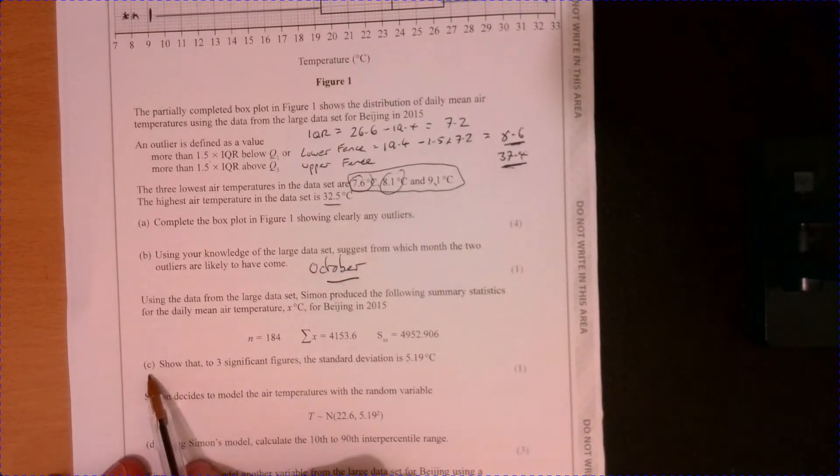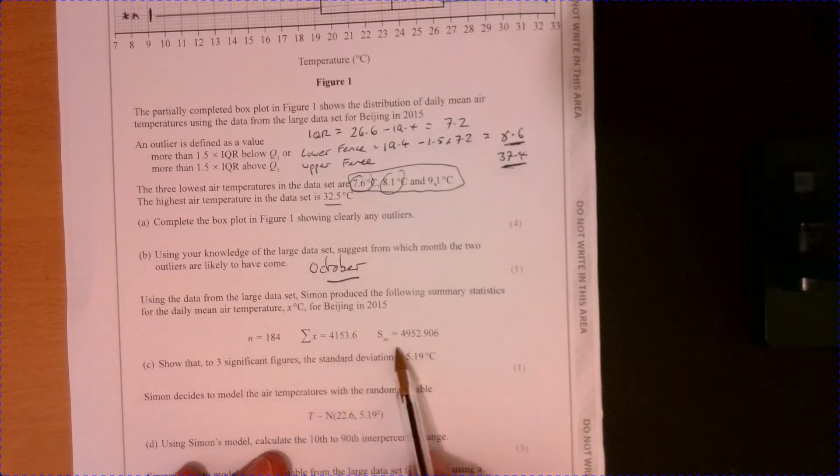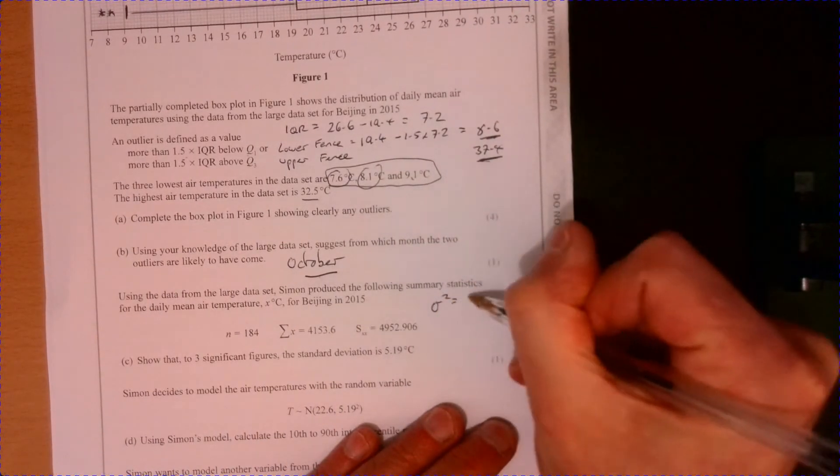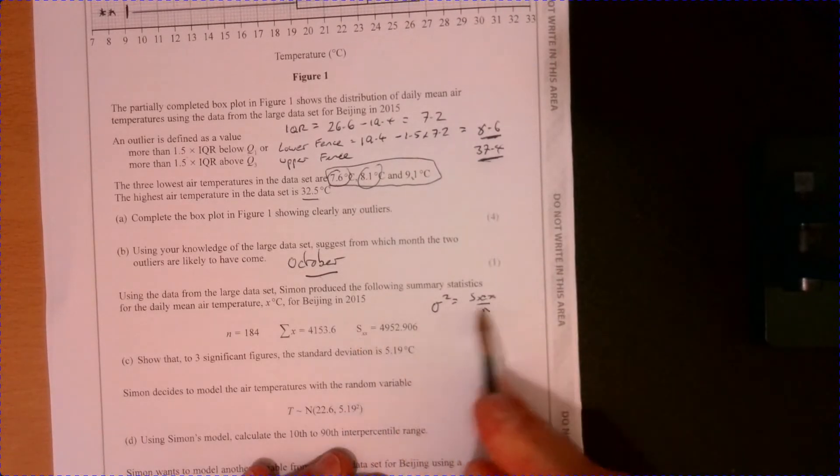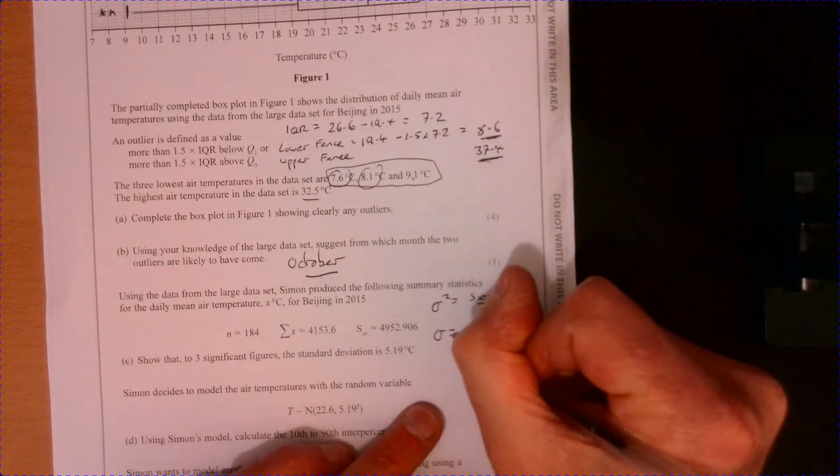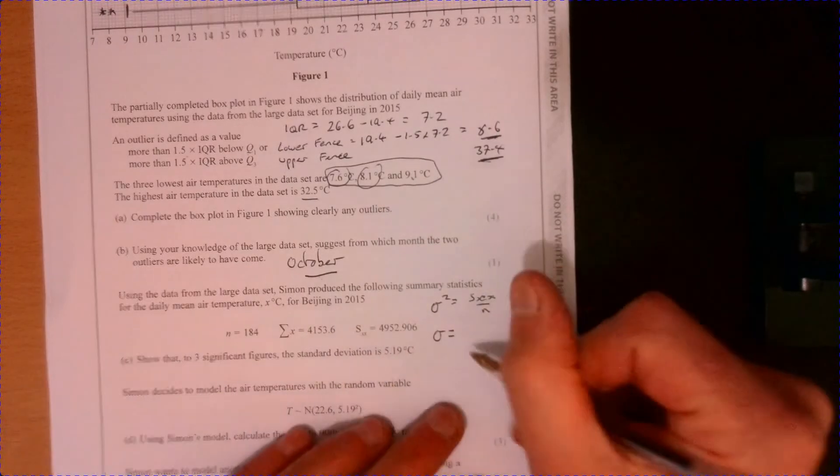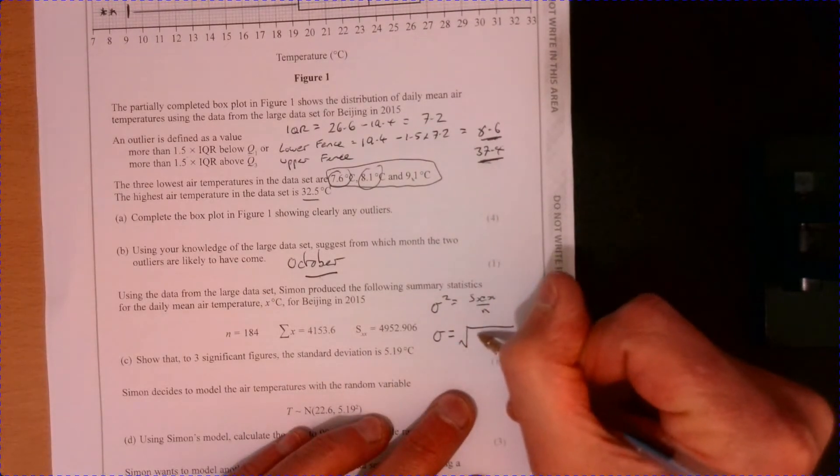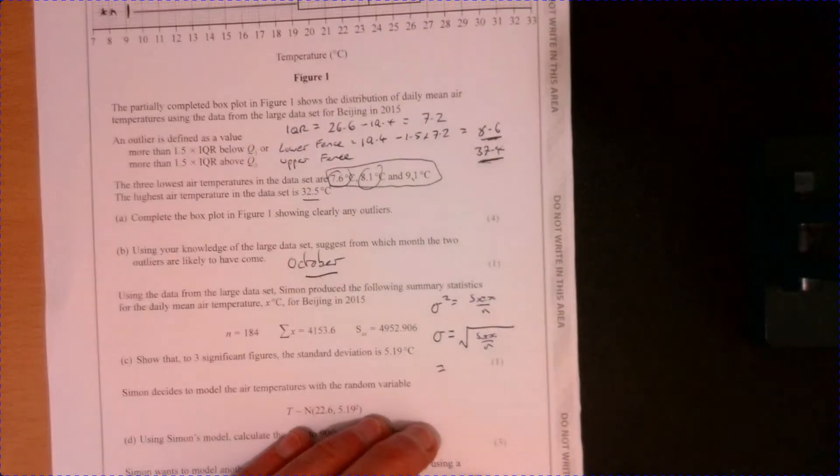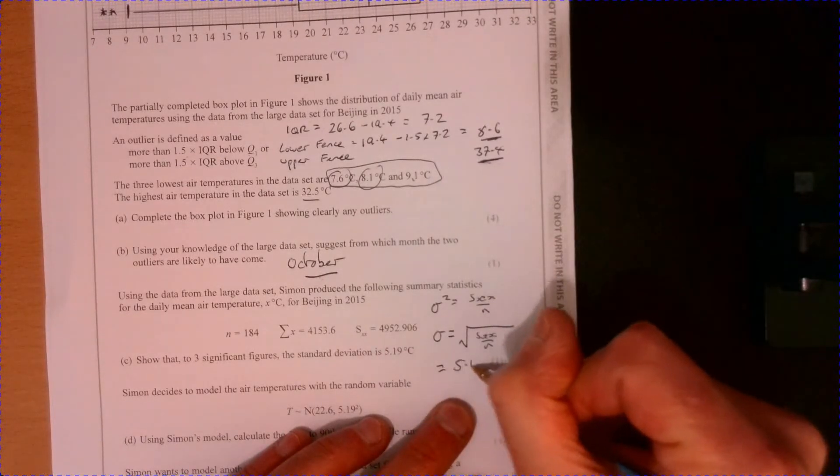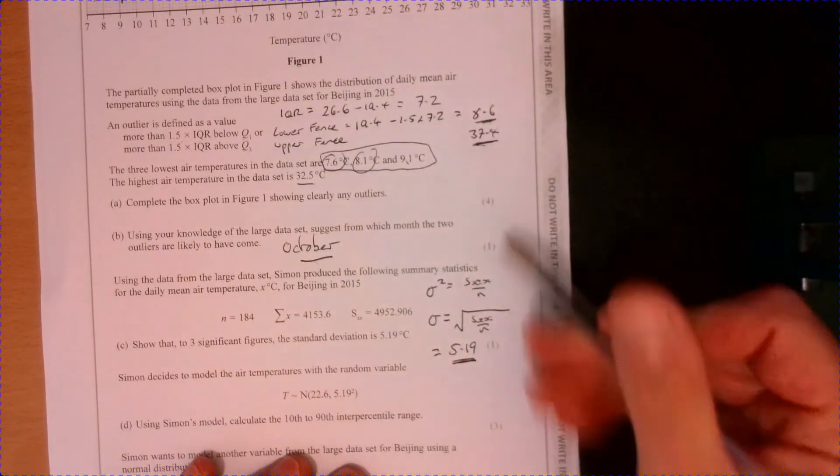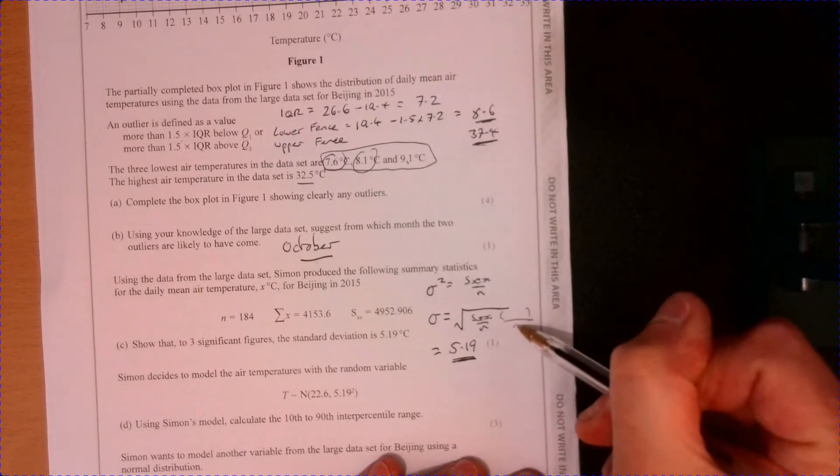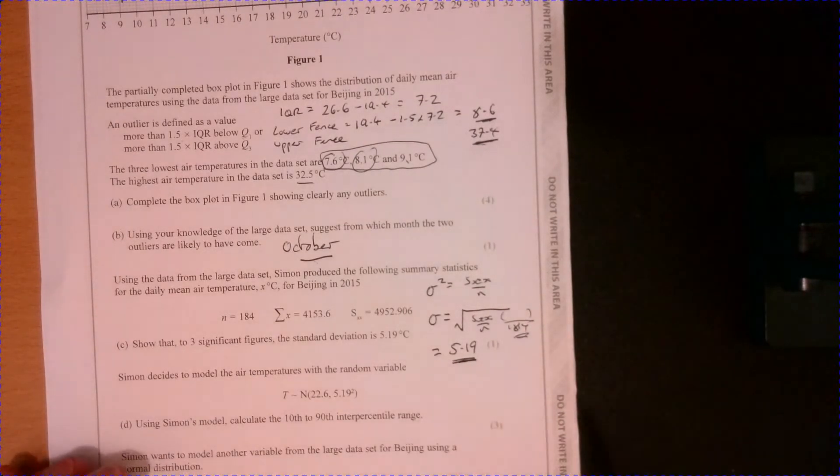Let's have a look at C. So all we've got to do on C is we're just given some summary data just here. We should know just from looking at our formulae book, we're told variance is equal to this figure divided by n. So then the standard deviation is just going to be this figure divided by n and rooted. So I'm just going to substitute those values in. And if we substitute those in, that gives me 5.19. I might actually just write those numbers out just so we can see them just there.